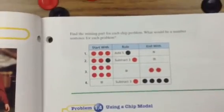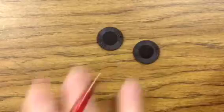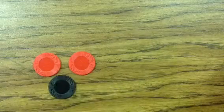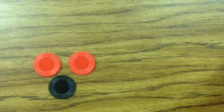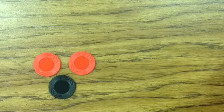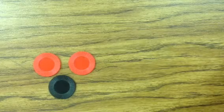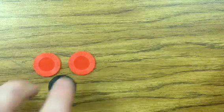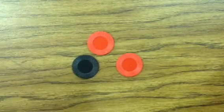So now our next one. Our next one says start with 2 red and 1 black. 2 red, 1 black. And now we're going to subtract 3 red. So what that means is I'm going to subtract away negative 3. Well, I can't take away 3 red because I don't have that right now.